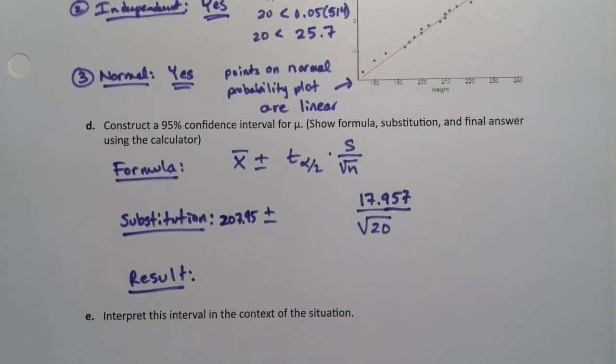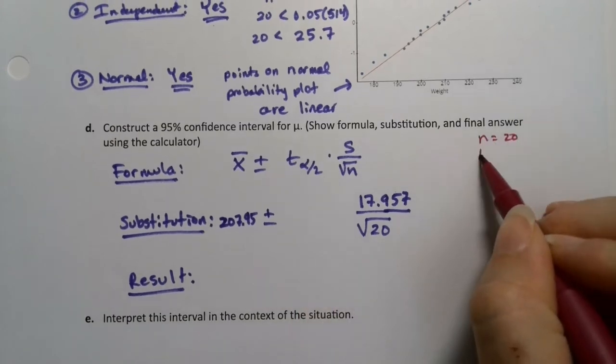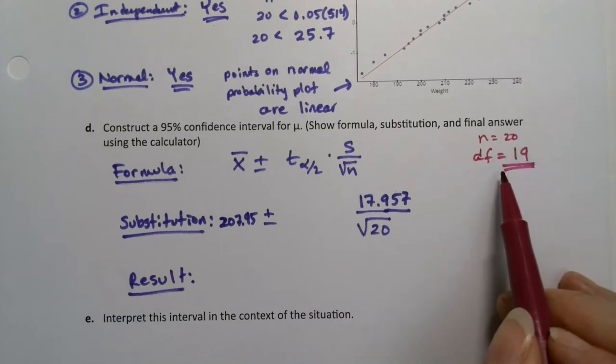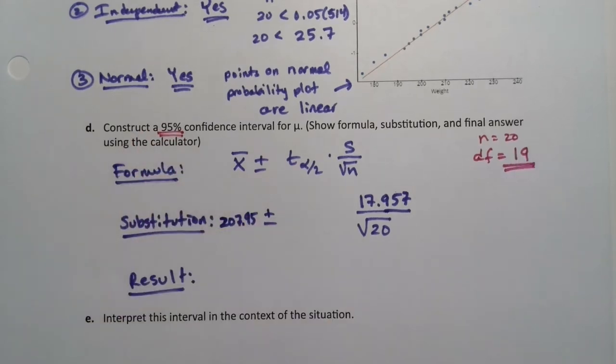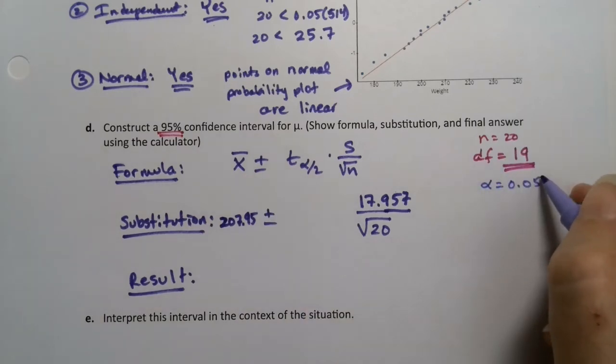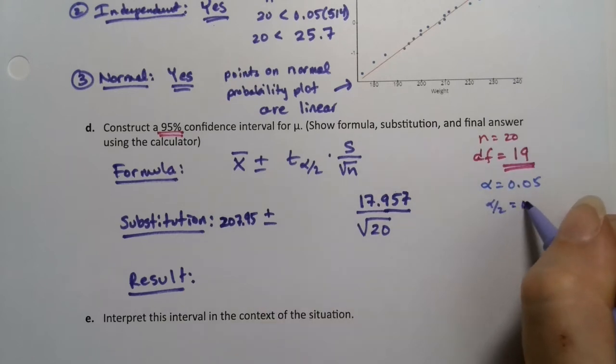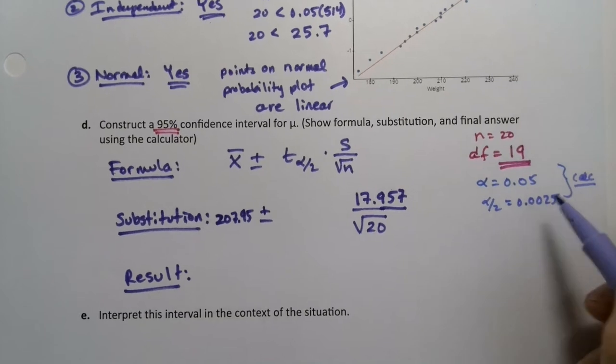Now what about that t alpha over 2? That's always a lot of work. Remember that n was 20, so degrees of freedom is 19, right? It's n minus 1. Why am I doing that? Because I also noticed that I have a 95% confidence level. So that means alpha is 0.05 and alpha over 2 which the formula tells us to use is 0.025. Now this purple part you only need if you're using the calculator or the table. If you're using StatCrunch you do not.